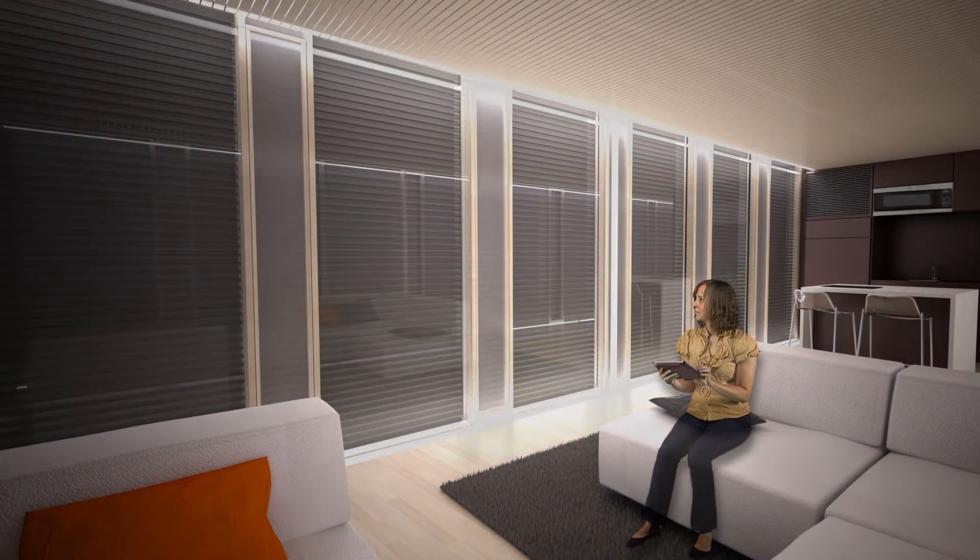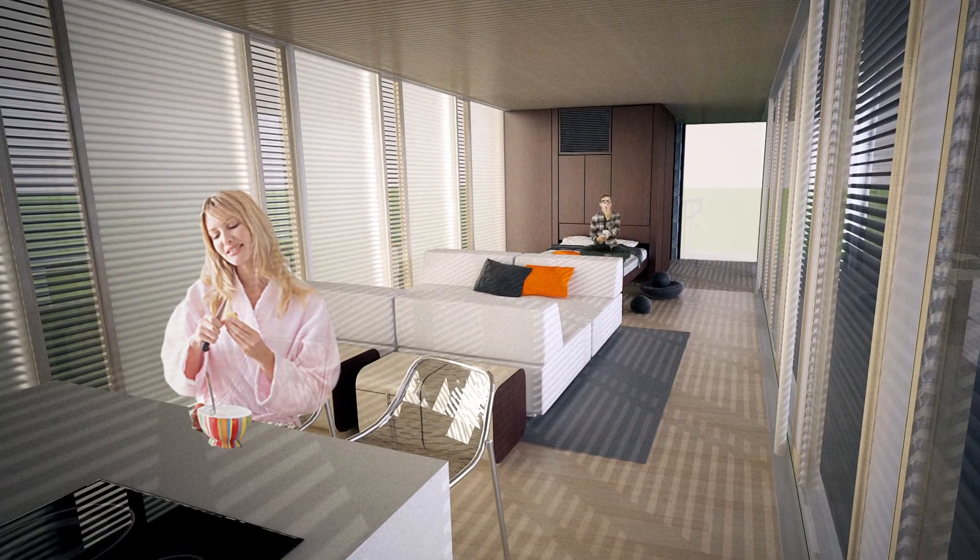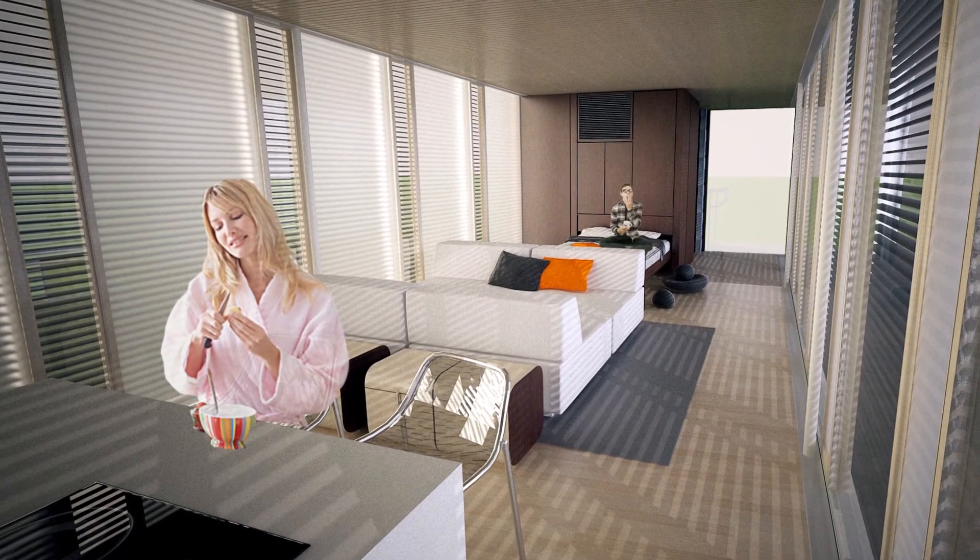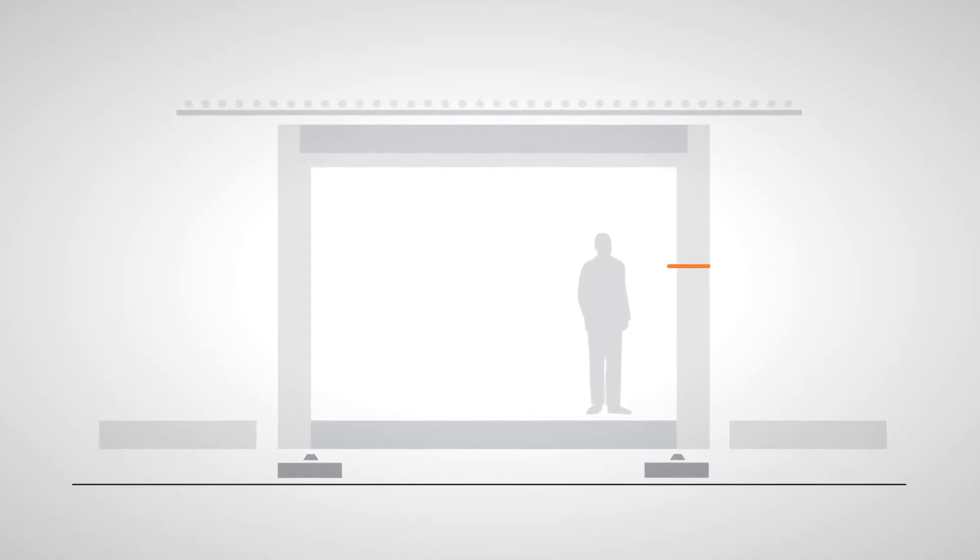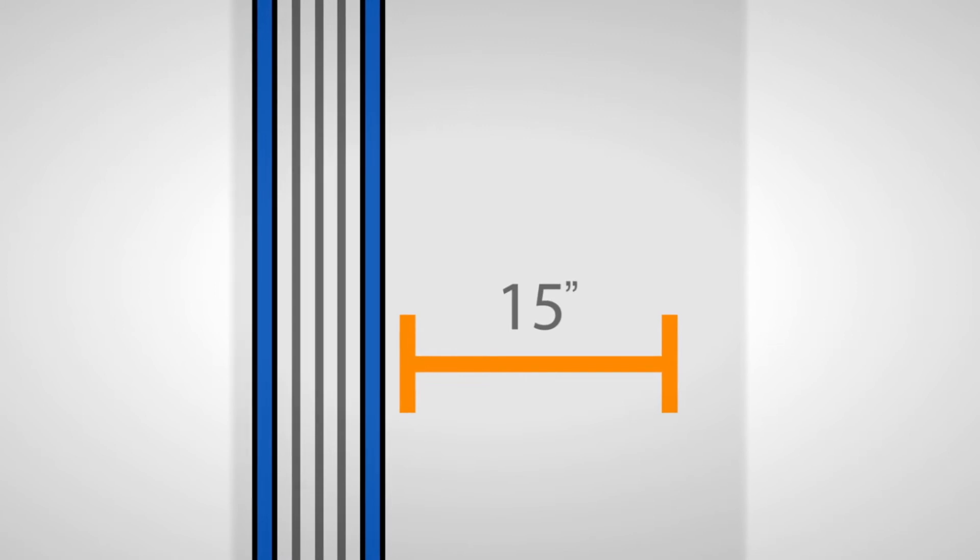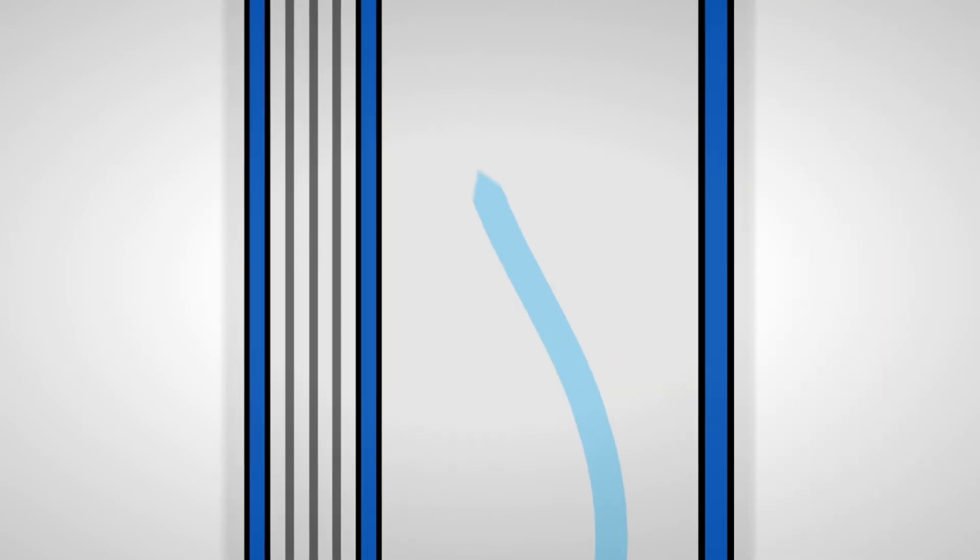The double glass facade solves the design challenge of maximizing transparency, views, and natural lighting without compromising the thermal envelope. It consists of an inner insulating double pane window separated by multiple mylar films. A second glass pane is spaced 15 inches from the interior window, creating a ventilated air cavity.